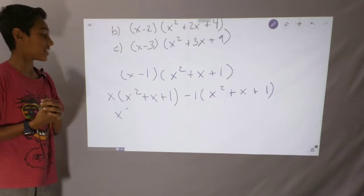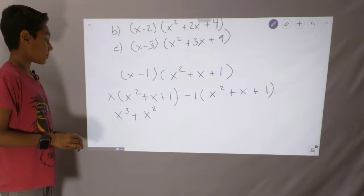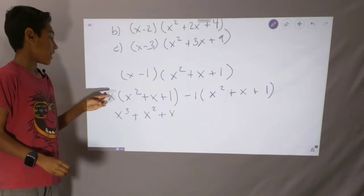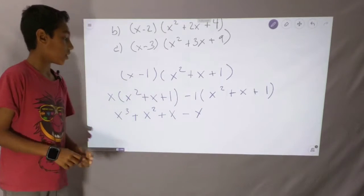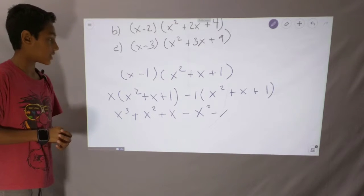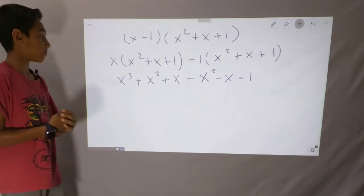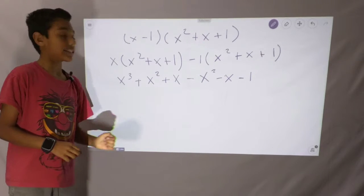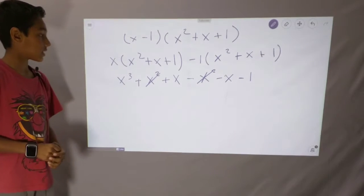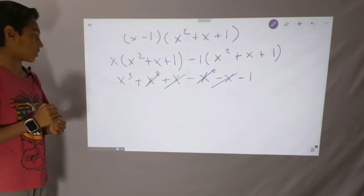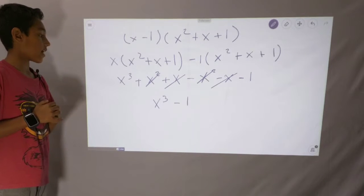x times x squared is x to the third, plus x times x which is x squared, plus x times 1 which is x. Then negative 1 times all of those is minus x squared, minus x, minus 1. So now we can cancel out the like terms: x squared minus x squared is 0, and x minus x is 0 also. So we're left with x to the third minus 1 as our answer.